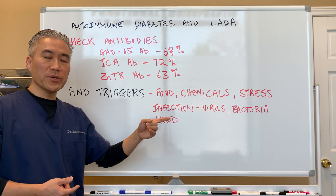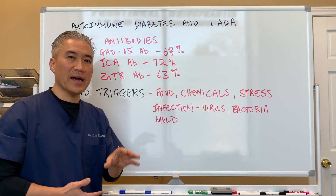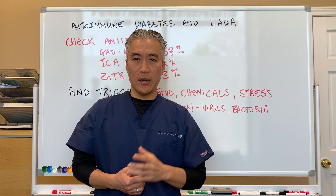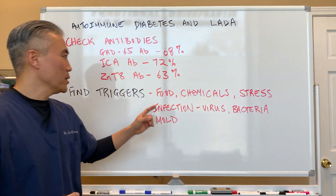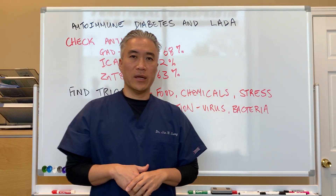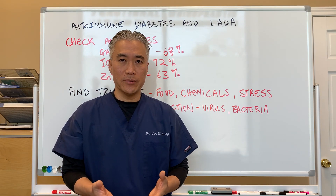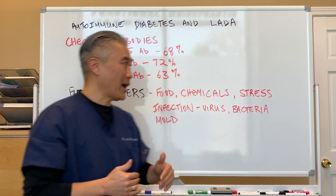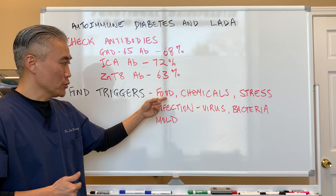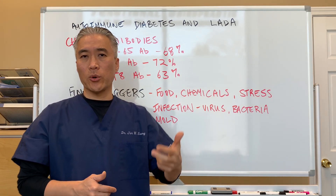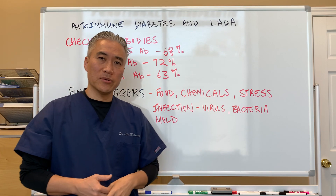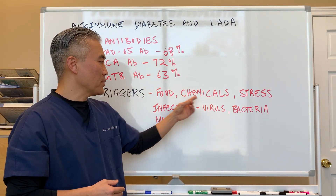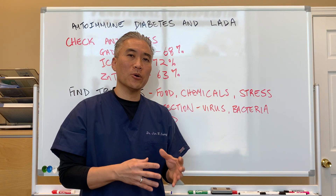For autoimmune diabetes, you have to be able to find and remove the triggers that cause the inflammatory or immune response. Food is an important factor because it can cross-react — certain peptides in gluten, for example, can look like pancreatic islet cell tissue, triggering an immune attack. Important food triggers include gluten, dairy, soy, and lectins. Chemical factors such as BPA or dry-cleaning chemicals can also drive immune responses, and understanding what kind of immune response a patient is having to these substances is key to helping them.